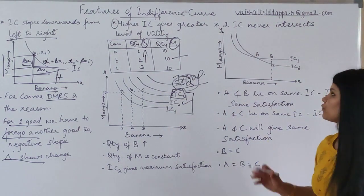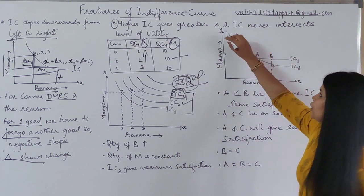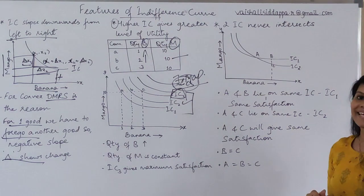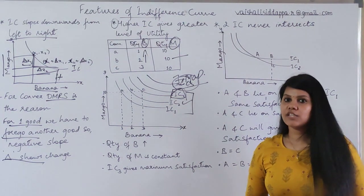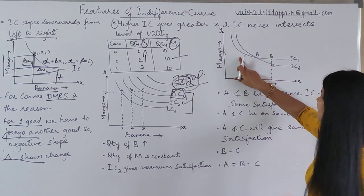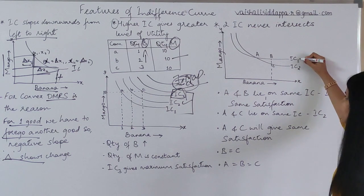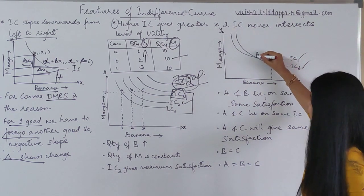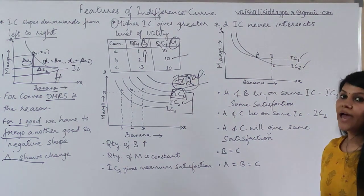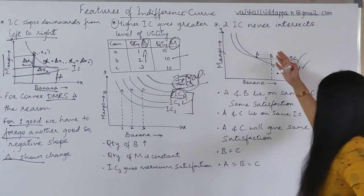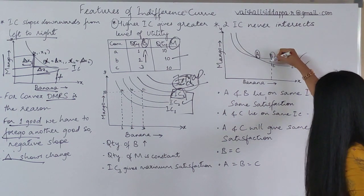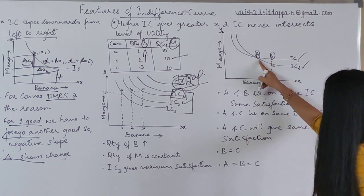The last feature we are going to talk about: two indifference curves never intersect. This is logically sound. When you come to ranking, how can you rank two intersected indifference curves? You can see here two indifference curves, IC1 and IC2, which are intersected at point A. Now tell me — which one is going to give you the highest satisfaction? What is your preference? You cannot rank it — it is quite difficult. Points A and B are both touching IC1.